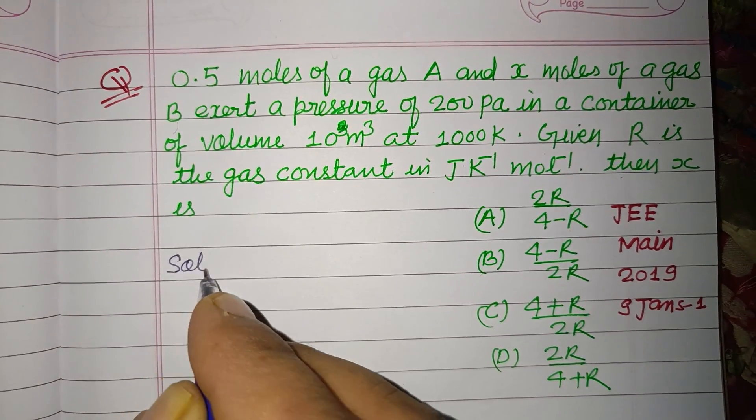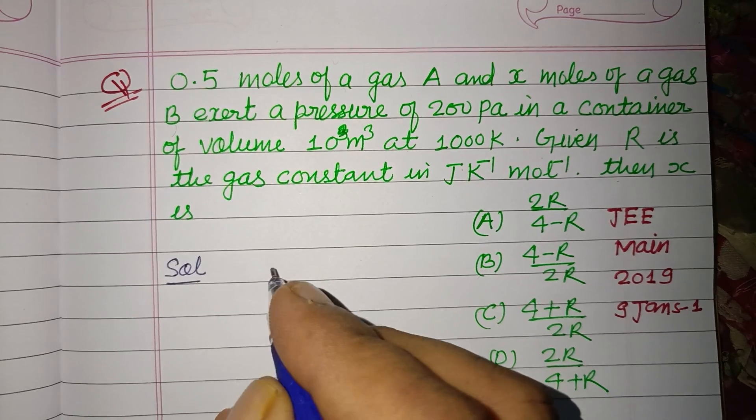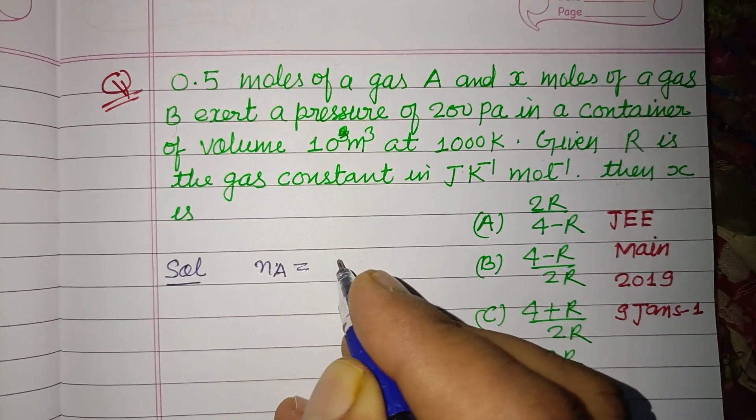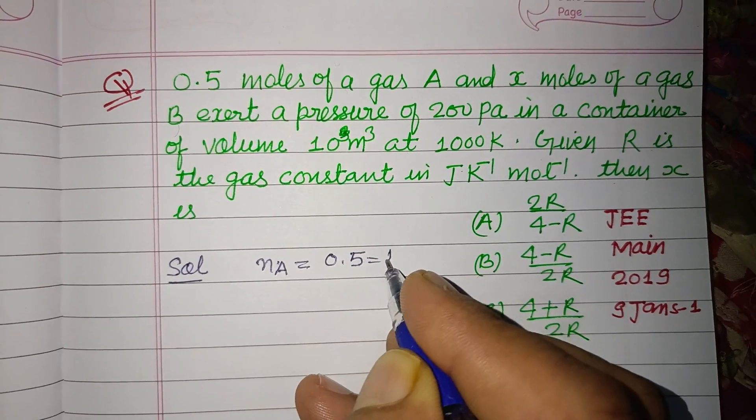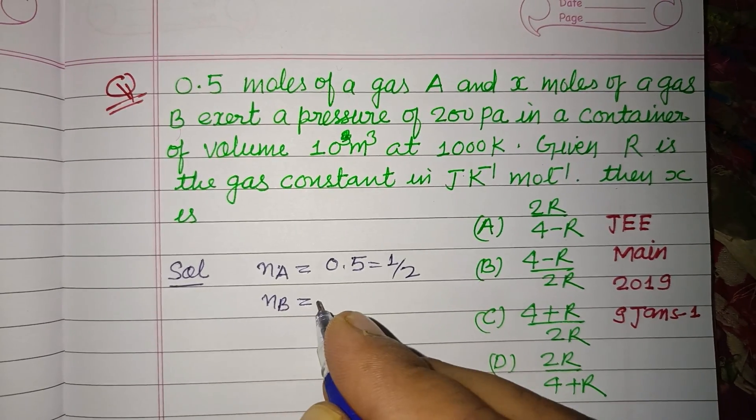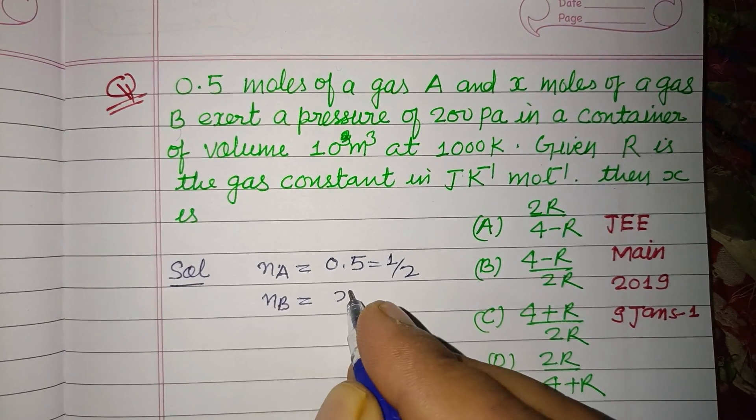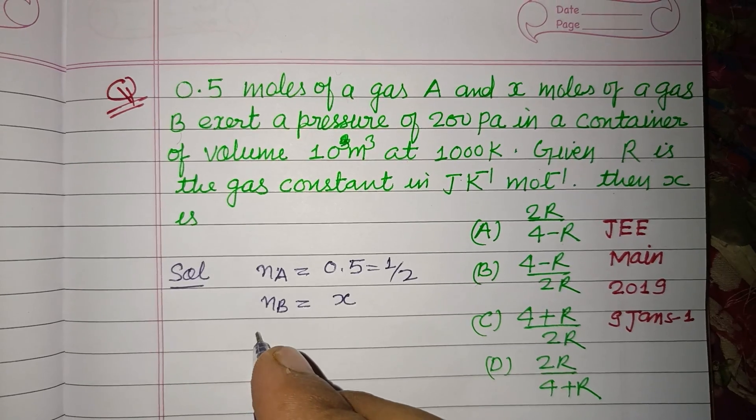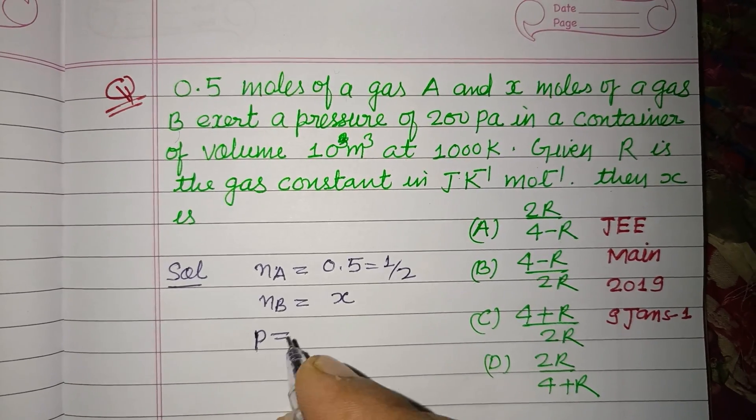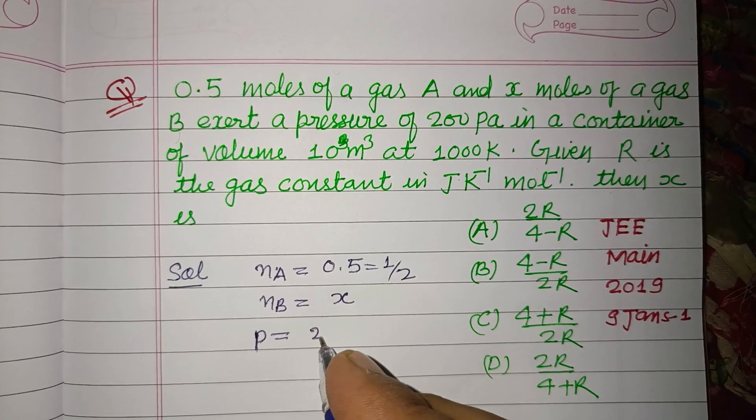So students, here the given data is: number of moles of A, nA is 0.5, that is 1/2, number of moles of gas B, nB is given as x, and here pressure is given to us which is 200 Pascals,